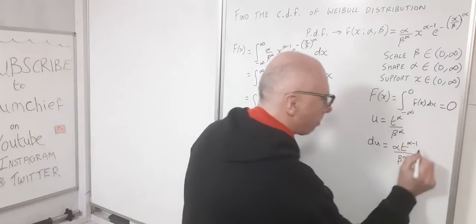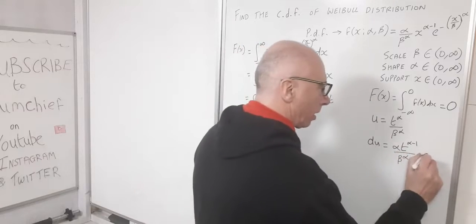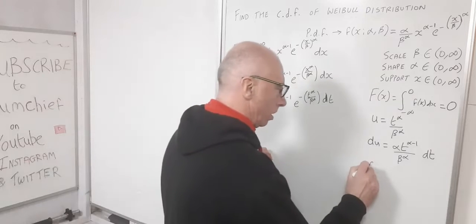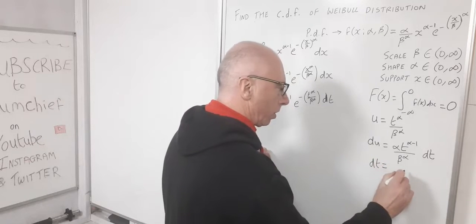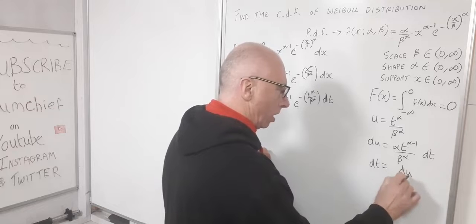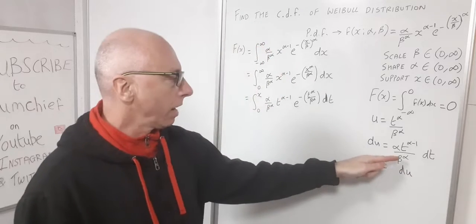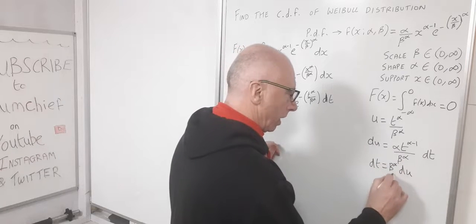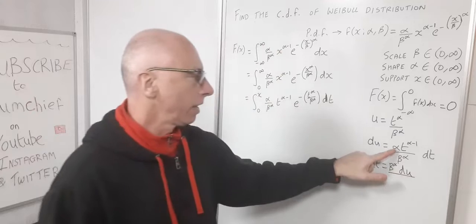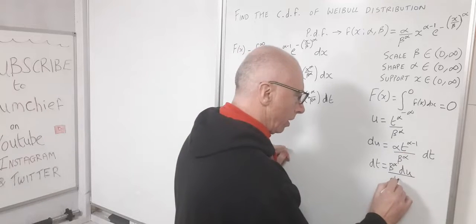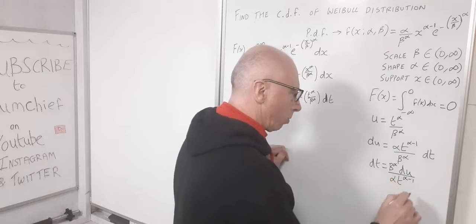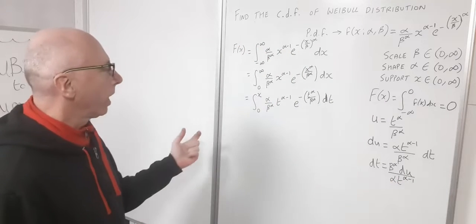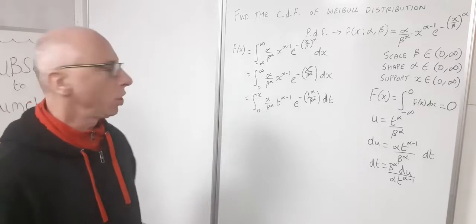Now let's isolate dt. Rearranging, dt equals beta to the alpha divided by alpha t to the alpha minus one, times du. Now I'm ready to substitute everything and rewrite the integral in terms of u. I just need to be careful about changing the limits using u equals t to the alpha over beta to the alpha.